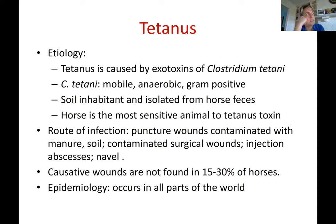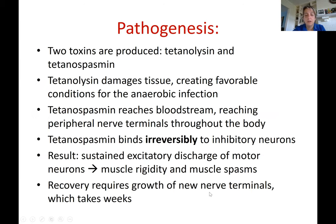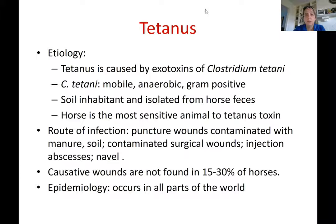In accidents when people scrape their arms and create scabs, the area underneath the scab creates an anaerobic-type environment. That particular area can also create an environment for this bacteria to produce toxins.